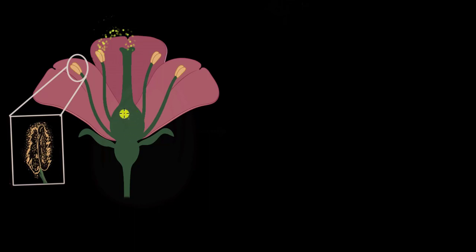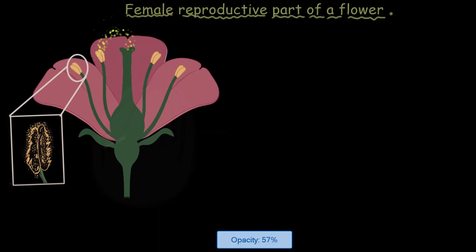Before we discuss in detail about fertilization and what all happens in fertilization, we need to first understand the female part. So in this video we are going to talk in detail about the female reproductive part of a flower, and we call that part the pistil.